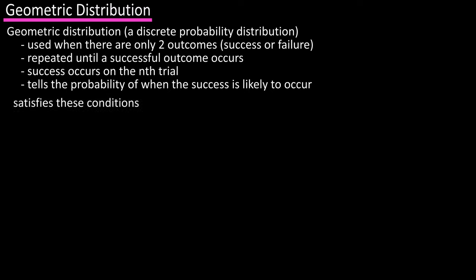The geometric distribution satisfies the following conditions. Number one is that each trial has only two outcomes, a success or a failure.